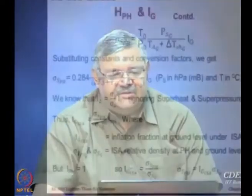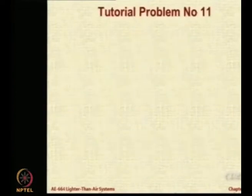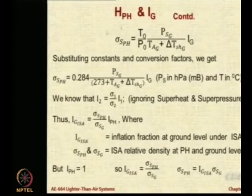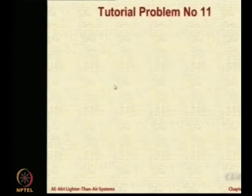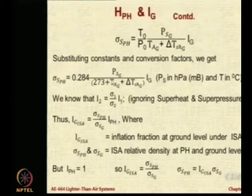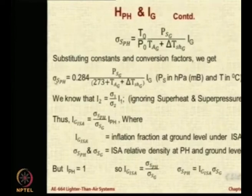So, therefore, now you know the value of IG. Now, what about PSG pressure at the ground level? So, it is given as 990. Then what is the value of T0, P0 you know already. This ratio itself you know. TAG is 16 degrees centigrade. So, it is 273 plus 16 and delta TSG is 4 degrees that is the superheat. So, you can get the value of sigma SPH from this expression.